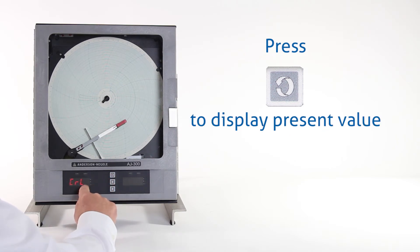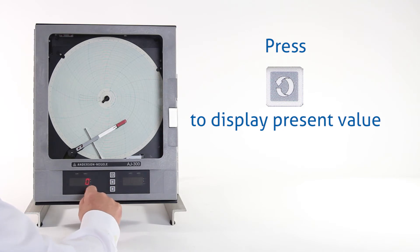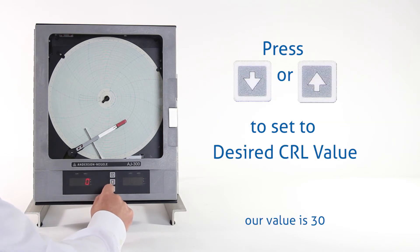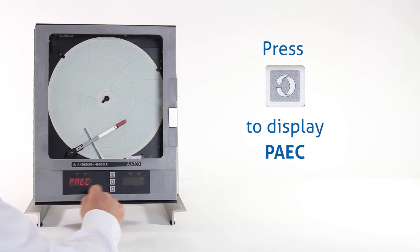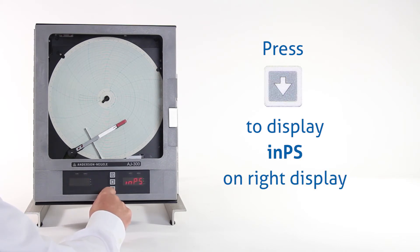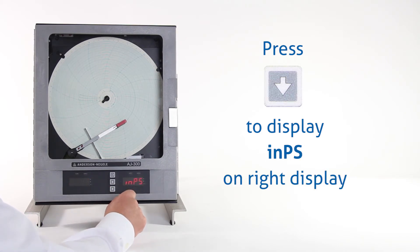CRL is for chart range lower. We press the scroll key, and this value we want to set up to 30. So we use our up arrow key and hold that in to get us up near 30, then once we have that set to 30, we press the scroll key one time. We'll see PAEC on the left display. Now we use the down arrow key to get over to INPS on the right-hand display.